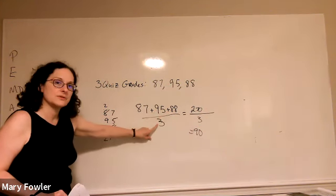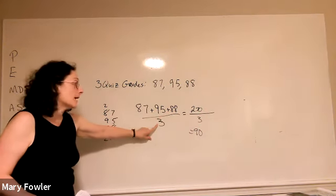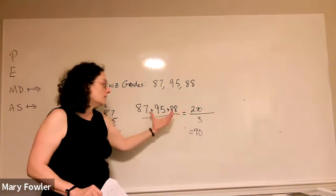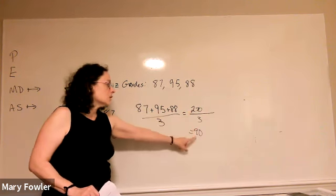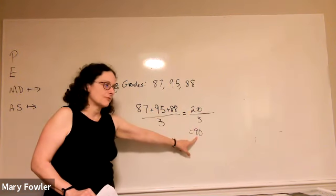So we divide by the number of observations or the number of quizzes that we had. And in the numerator, using PEMDAS, your order of operations, you get 270. So 90 is my average.